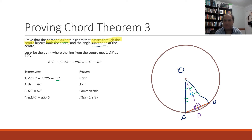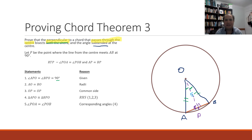We can say that triangles APO and BPO are now congruent because they both have a right angle, the hypotenuses are the same, and the extra side OP is the same — so we've proven that APO and BPO are congruent by Right angle, Hypotenuse, and Side, proven in steps one, two, and three respectively. Now that we've got congruency, the corresponding angles POA and POB must be equal, and similarly AP and BP must be the same as corresponding sides in congruent triangles. We've proven both statements true, so the theorem must indeed be true. QED.